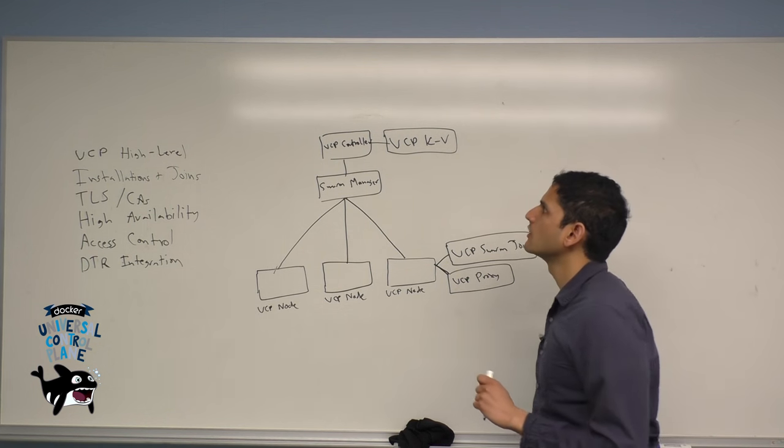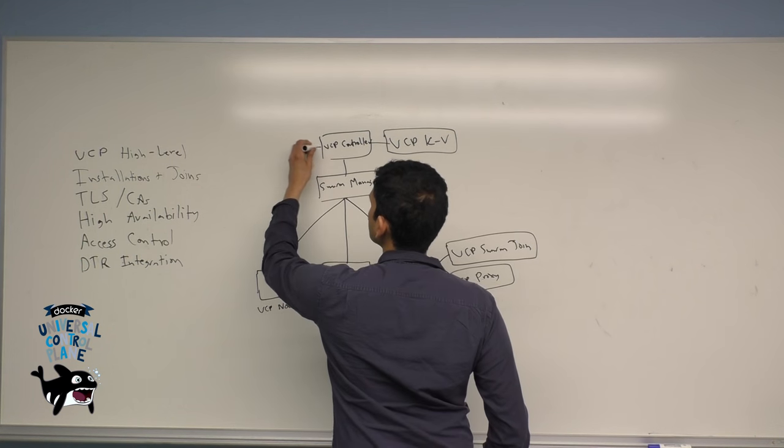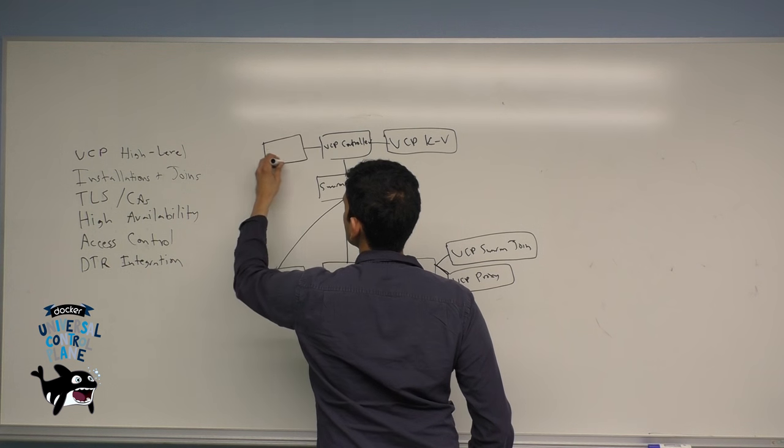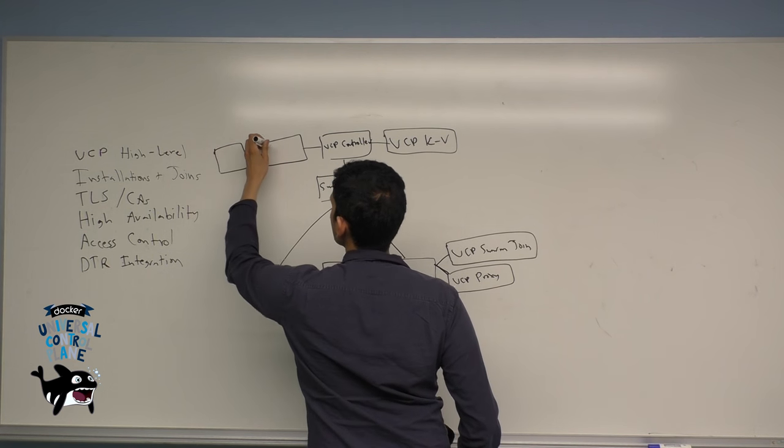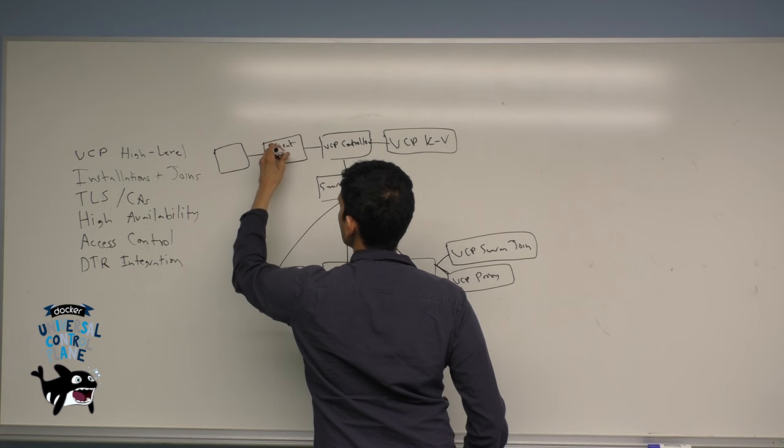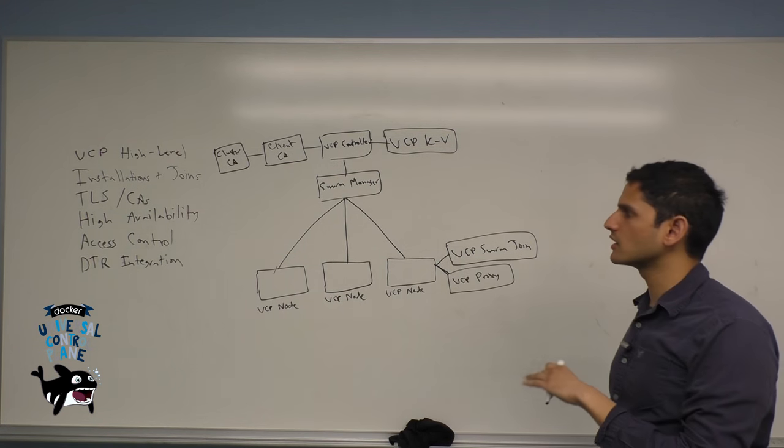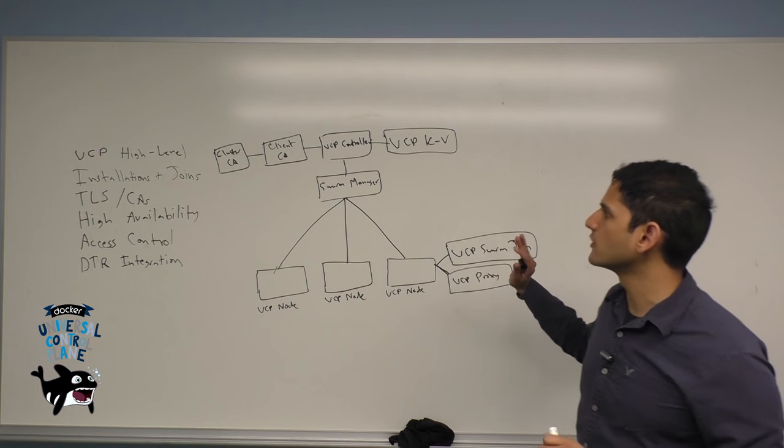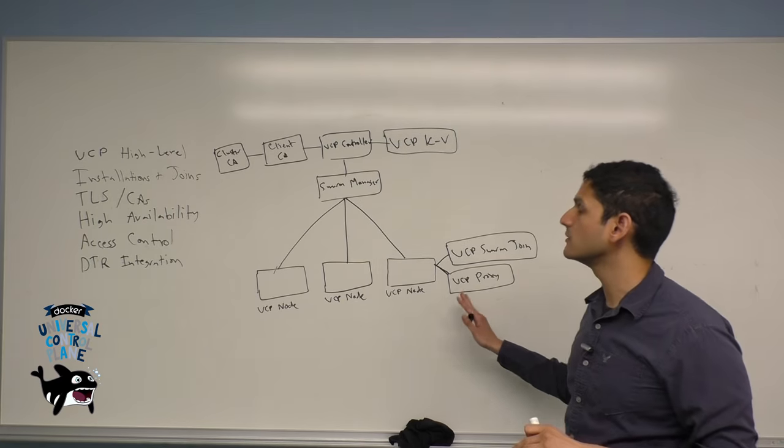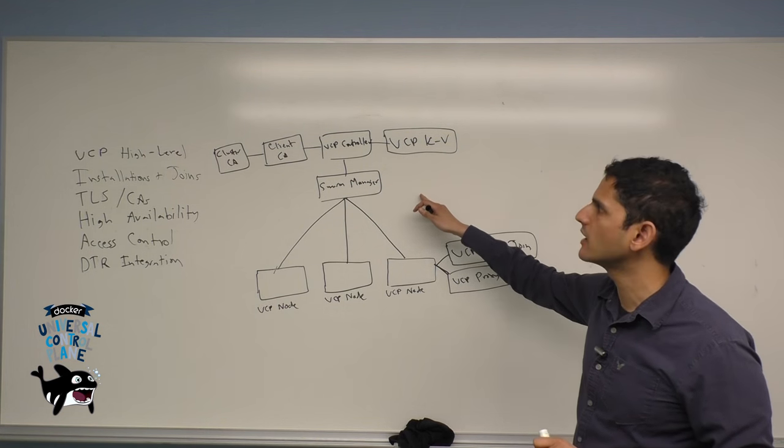The two other important containers are the CA container, certificate authority. This is what ensures that your credentials are maintained throughout the cluster. There are two different containers involved here. One is the client CA and the other is the cluster CA. The cluster CA provides internal certificate authority credentials within the cluster. This ensures that when the Swarm Manager sends a command to the UCP node, the UCP node knows that this is the correct, this is the authorized swarm that is sending those commands.